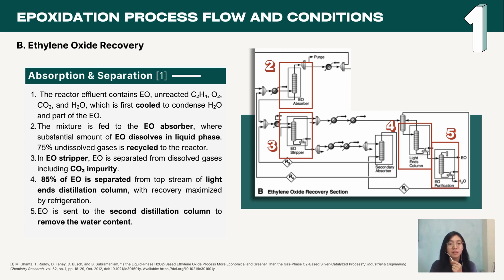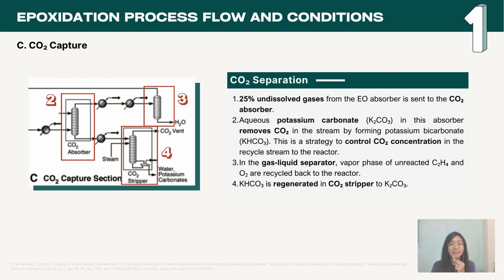The condensed ethylene oxide flows into the stripper to be separated from dissolved gases including carbon dioxide, and subsequently enters two consecutive distillation columns for dehydration to obtain pure ethylene oxide. From the previous ethylene oxide absorber, 25% of undissolved gases enter the carbon dioxide absorber with aqueous potassium carbonate to remove carbon dioxide.